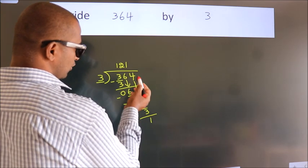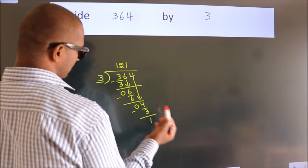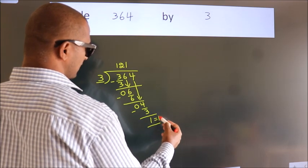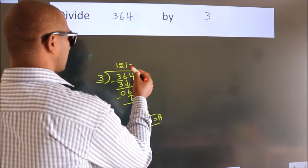After this, no more numbers to bring down. So we stop here. This is our remainder. This is our quotient.